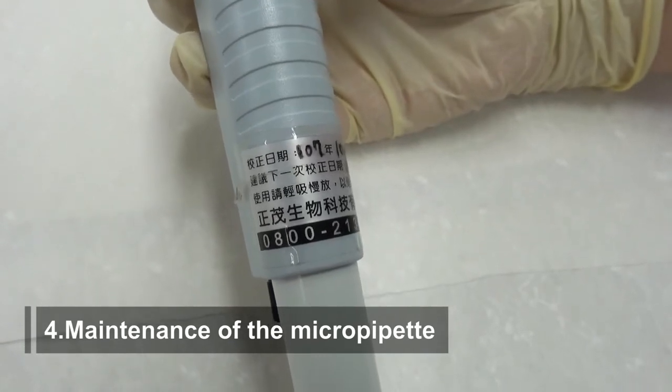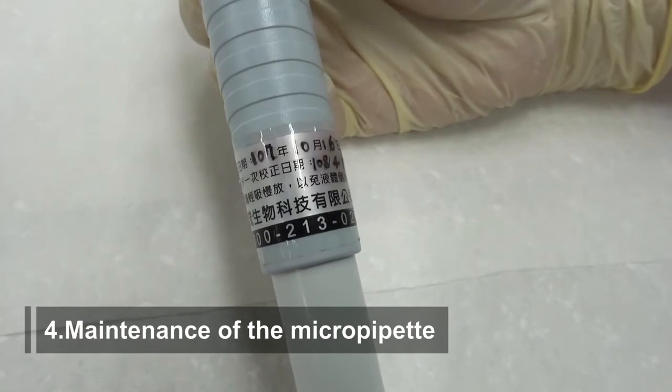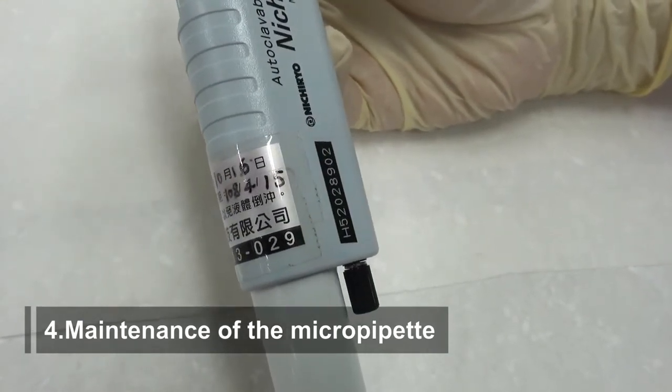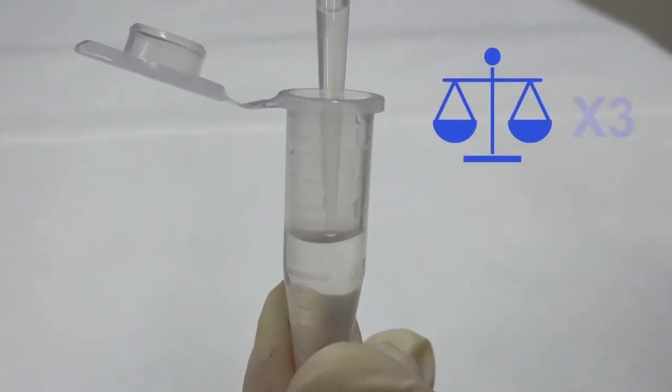Maintenance of the micropipet. The micropipet needs to be calibrated regularly to ensure accuracy and improve experiment reproducibility. A simple approach to check accuracy is to aspirate a certain volume of water and measure the weight. Repeat 3 times and calculate the error.